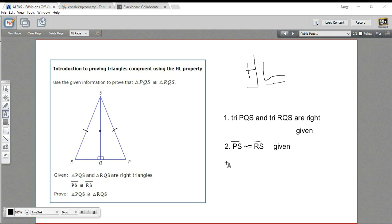And the leg is this side QS that's congruent to itself. So we can say QS is congruent to QS. And that is because of the reflexive property. Something is congruent or equal to itself.